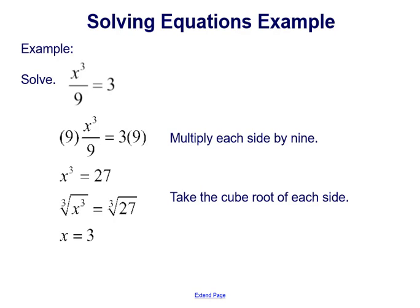Here's the second example. We have x cubed divided by 9 equals 3. So again, right away when we're asked to solve, we're trying to isolate or get that variable x by itself. And it's not. It's being cubed, but it's also being divided by 9.